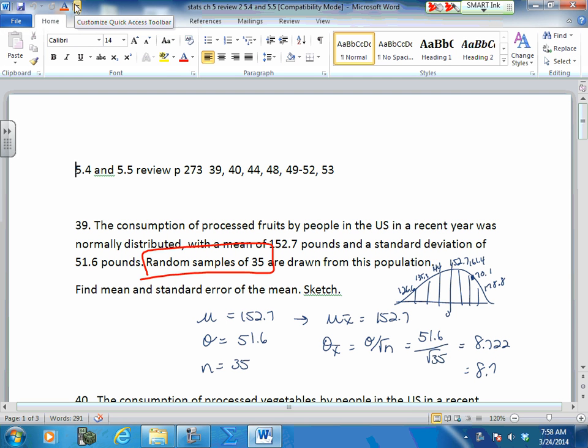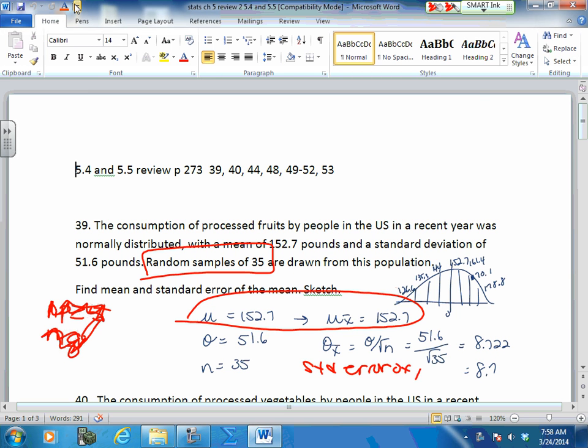So in this case, all you had to do was test it. Here's your test - N times Q. All you have to do here is find your mean, which is exactly the same, and find your standard error of the mean. Standard error of the mean is just your standard deviation over the square root of N.